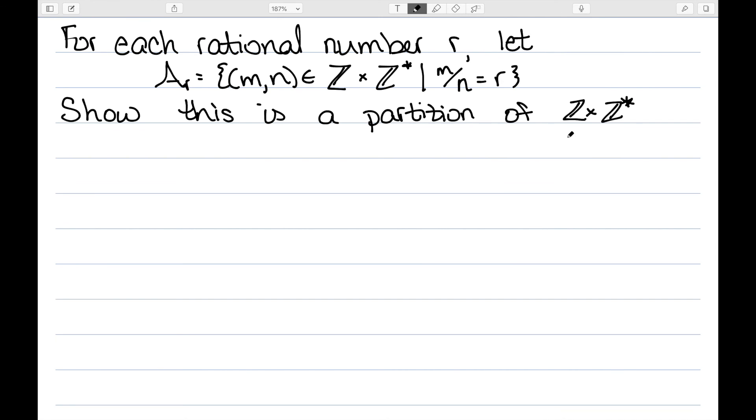Let's look at some examples. For every rational number r, I'm going to let Aᵣ be the set of ordered pairs (m, n) which belong to Z × Z*. So integers where the second coordinate cannot be zero, and we have such that the condition m/n is equal to r.